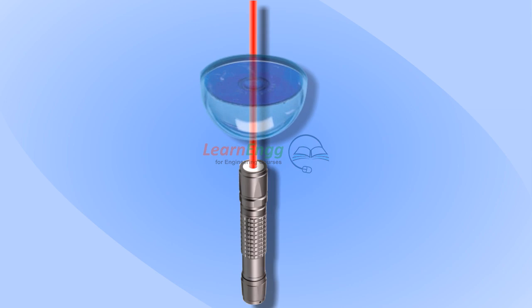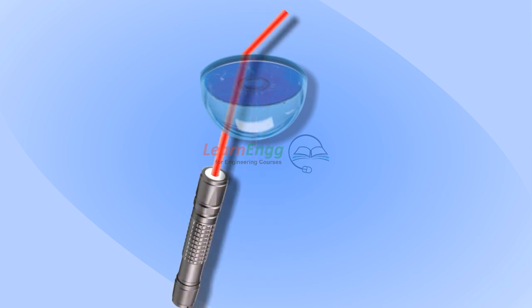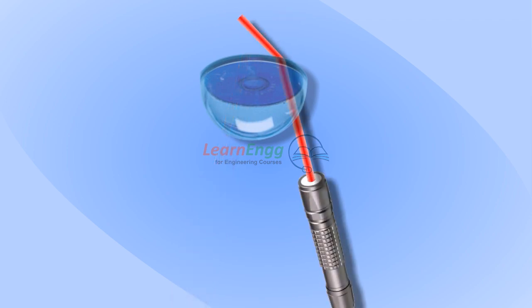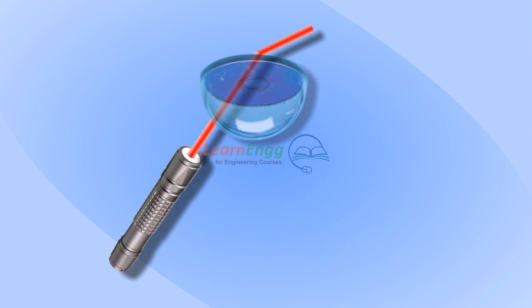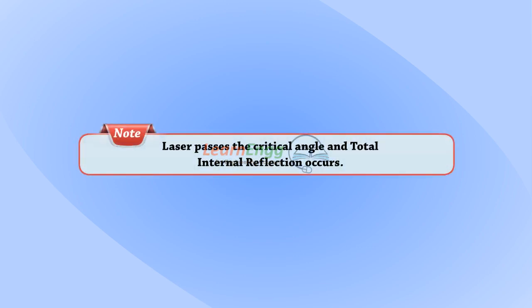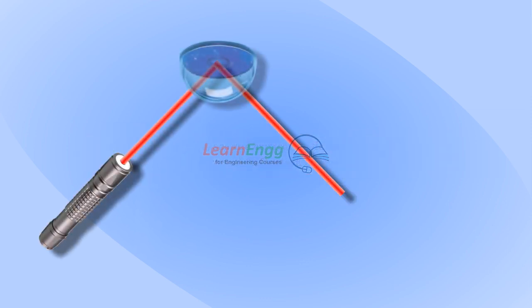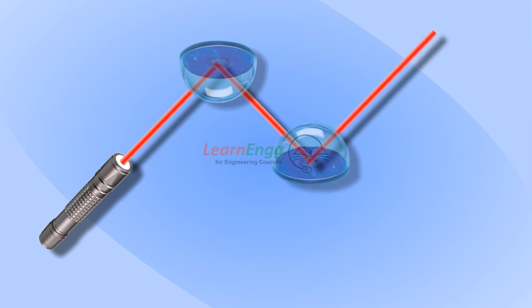Then the light is refracted or bent towards the normal. When the laser passes the critical angle, total internal reflection occurs. The critical angle is the angle of incidence in an optical denser medium for which the angle of refraction is 90 degrees.